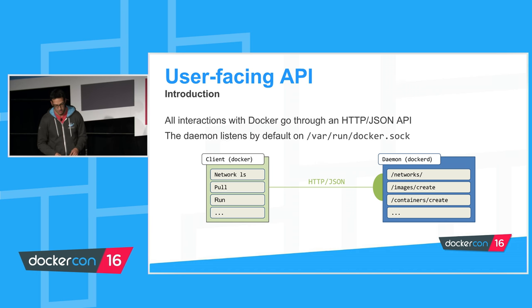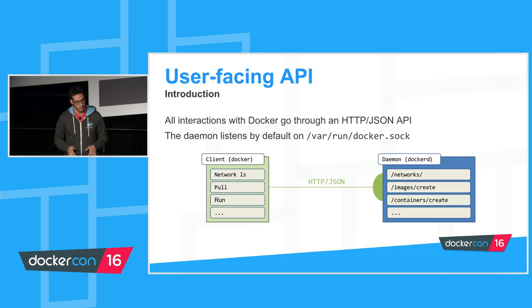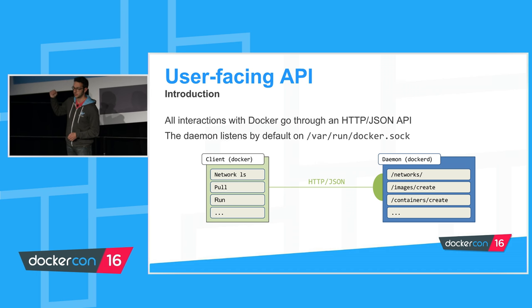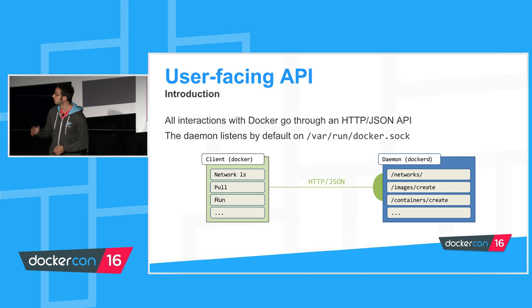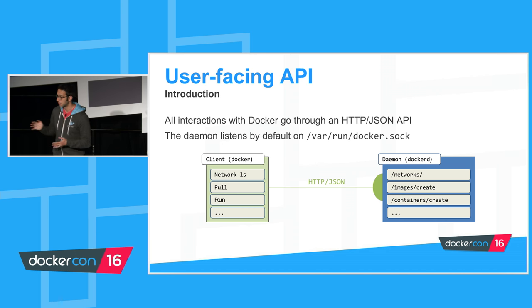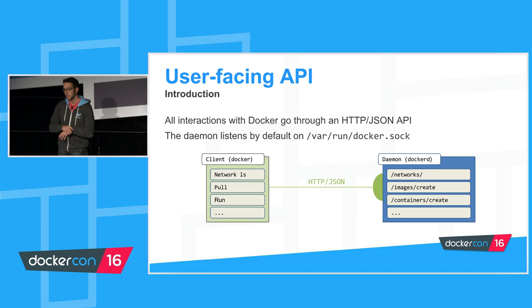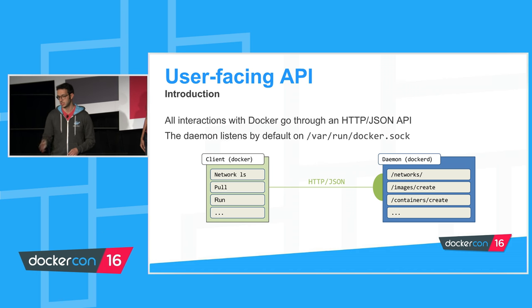By default, the Docker daemon listens on a Unix socket at /var/run/docker.sock. Whenever you type a Docker command — for example, docker network ls — this goes over the network as an HTTP request to the engine, hits the network API endpoint, and returns information about current networks. The Docker CLI is really nothing more than a very thin wrapper on an API client library. It has nothing privileged and no particular access to the daemon. Everything the client does is issue HTTP requests to the daemon.